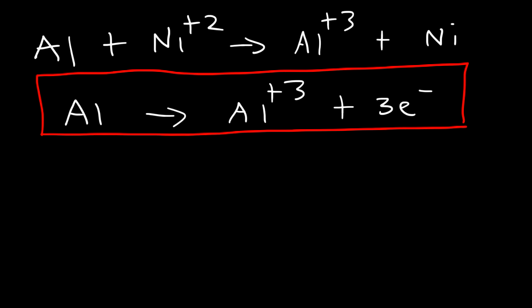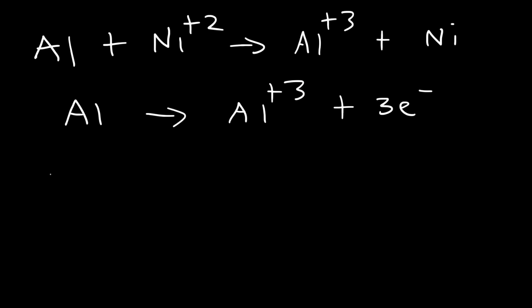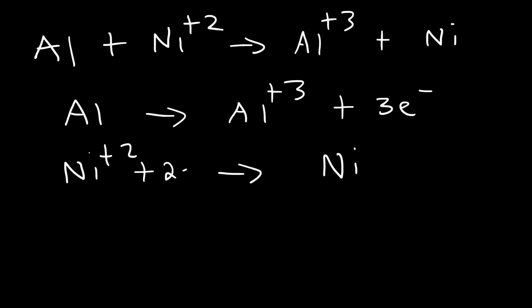Now let's move on to the second half reaction: Ni²⁺ turns into nickel metal. In order to balance the charge, we add two electrons to the left side. Whenever the electrons are on the left side, you have a reduction half reaction.